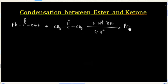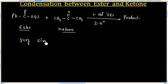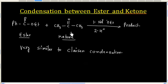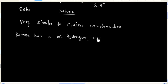Now let us consider this reaction. We have an ester and a ketone. This reaction is very similar to Claisen condensation. The ketone has alpha-hydrogen, i.e., acidic.